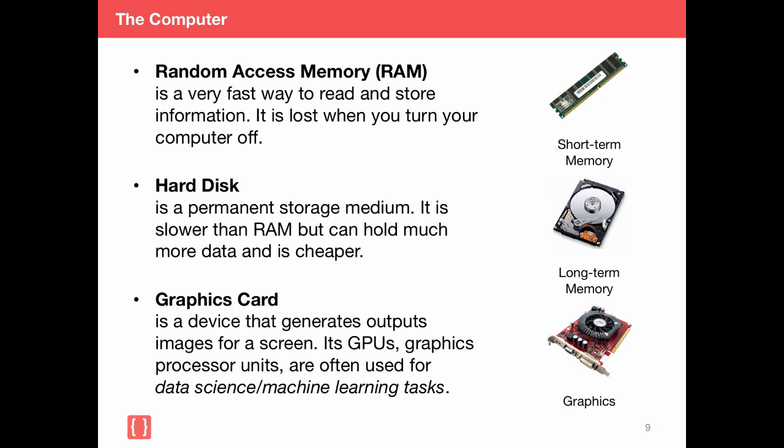Traditionally, graphics cards have been responsible for generating output on your computer display. For example, it displays this video lesson on your computer screen right now. In recent years, however, GPUs or graphics processing units, which are little electronic circuits on your graphics card, have been used to massively parallelize machine learning and data science computations. Using GPUs, you can increase computational performance by several orders of magnitude. This idea has made data scientists and machine learning engineers much more productive at work.